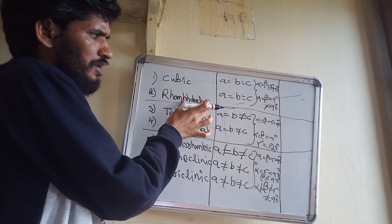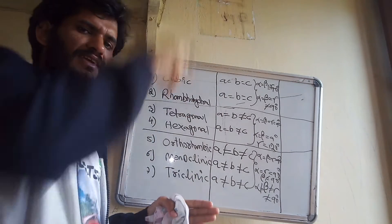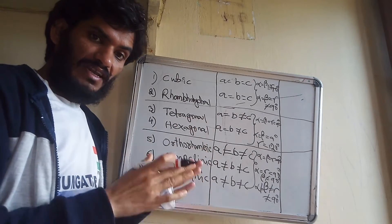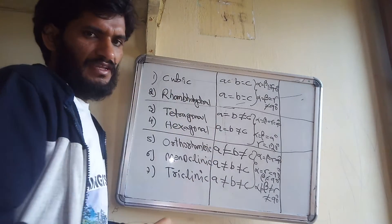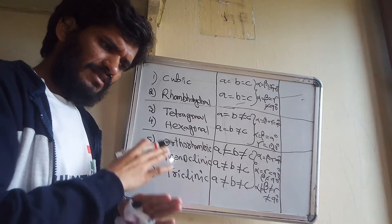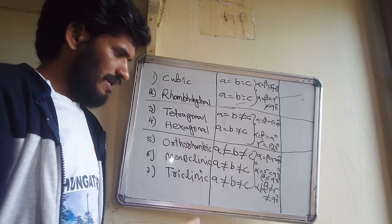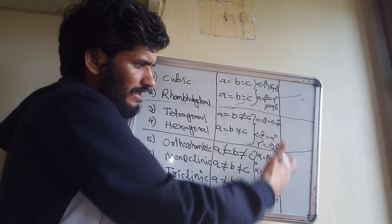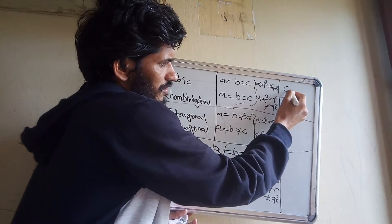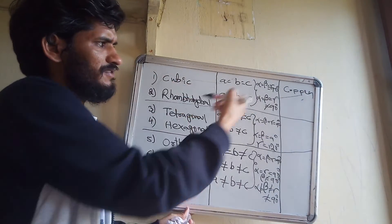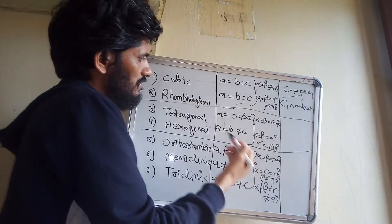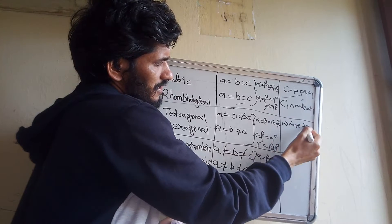To summarize the groupings: cubic and rhombohedral have a = b = c; tetragonal and hexagonal have a = b ≠ c; orthorhombic, monoclinic, and triclinic have a ≠ b ≠ c. Examples: for cubic the example is copper; for rhombohedral it is cinnabar; for tetragonal it is white tin.